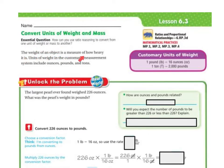The weight of an object is a measure of how heavy it is. Units of weight in the customary measurement system include ounces, pounds, and tons. This right here is going to be key: one pound equals 16 ounces, one ton equals 2,000 pounds. Let's unlock the problem.